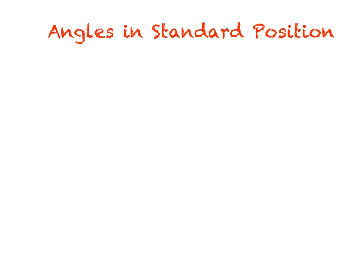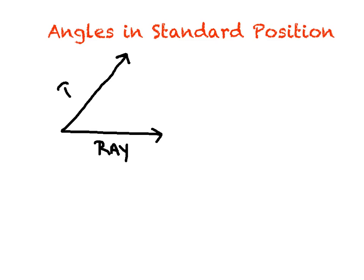Before we dive right in, let's take a moment to review a little bit about angles from geometry class last year. Hopefully you remember what an angle looks like. I'm going to draw this and stick two arrows on the end — these indicate they are rays. The sides are both rays, and they meet at this sharp corner, which is called the vertex. The angle inside we're going to represent in trigonometry with theta, representing however big this angle is.